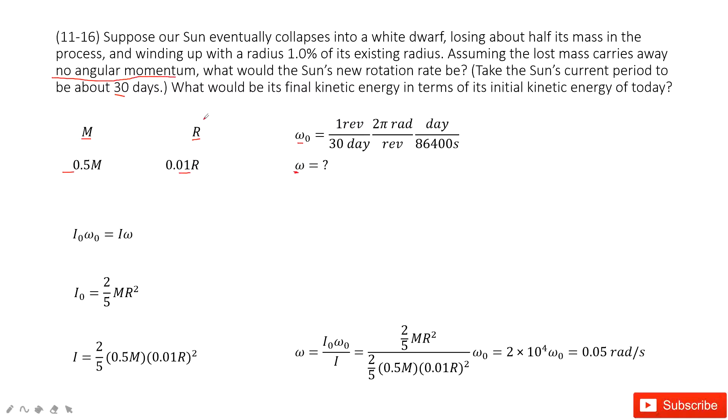That means in the process from Sun to white dwarf, the angular momentum is conserved. Initial angular momentum equals final angular momentum.